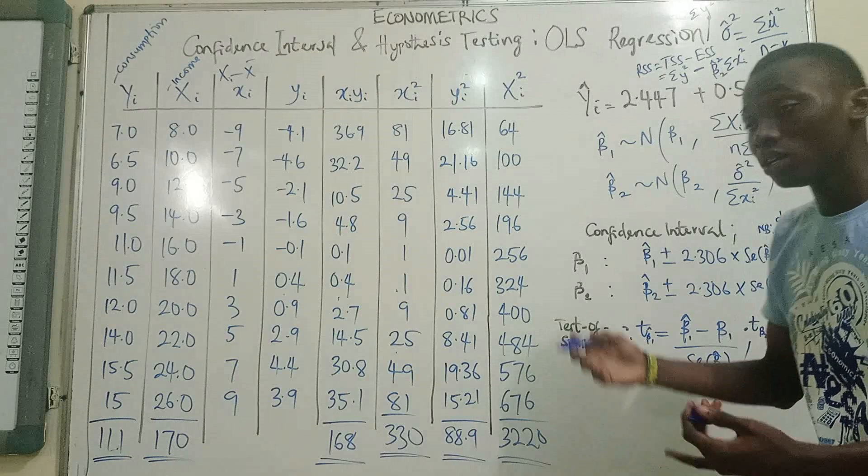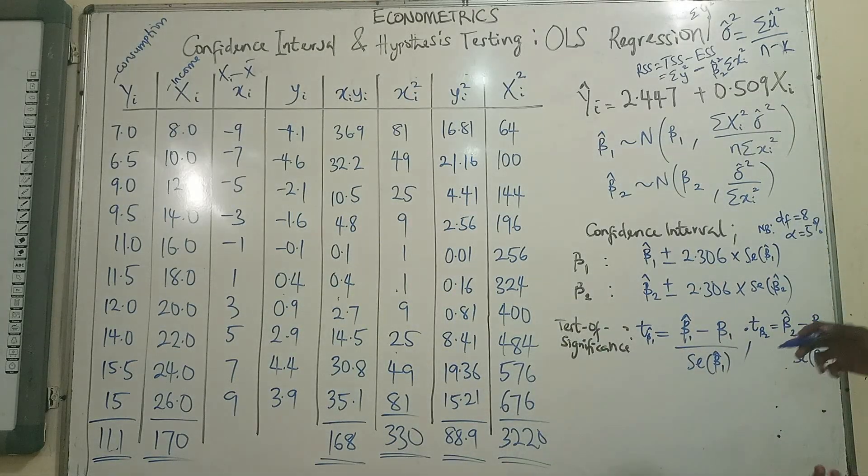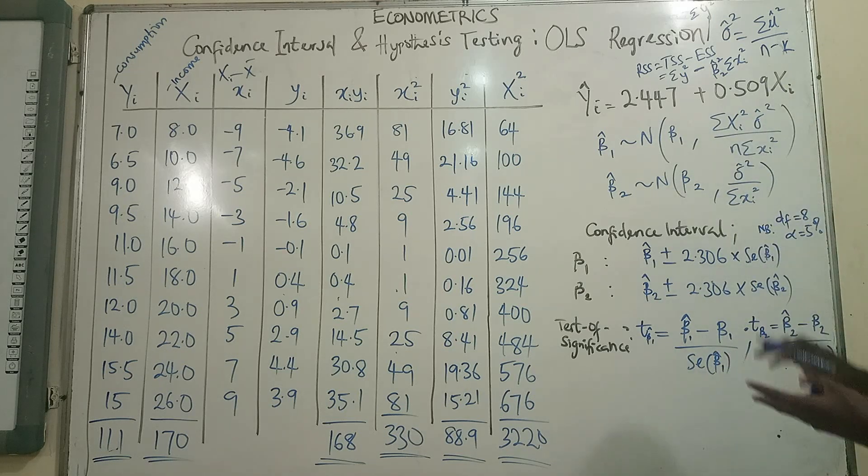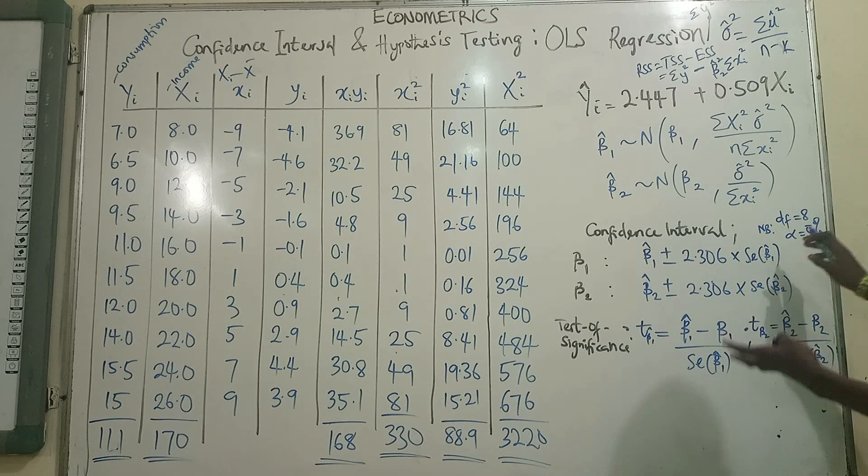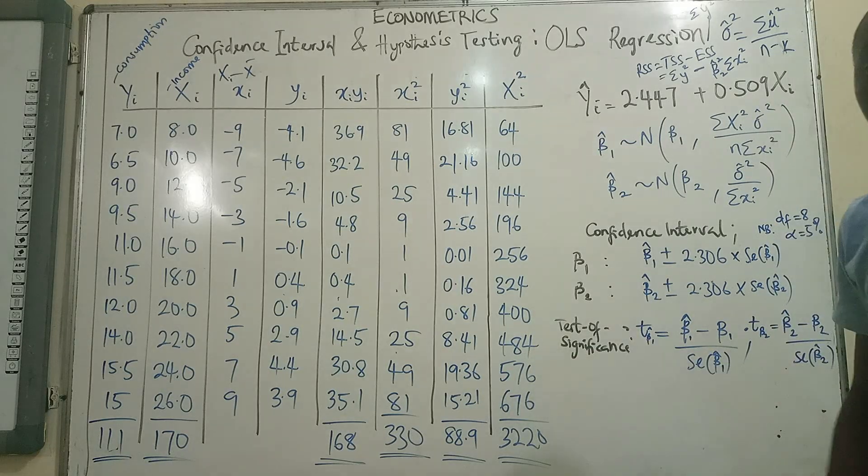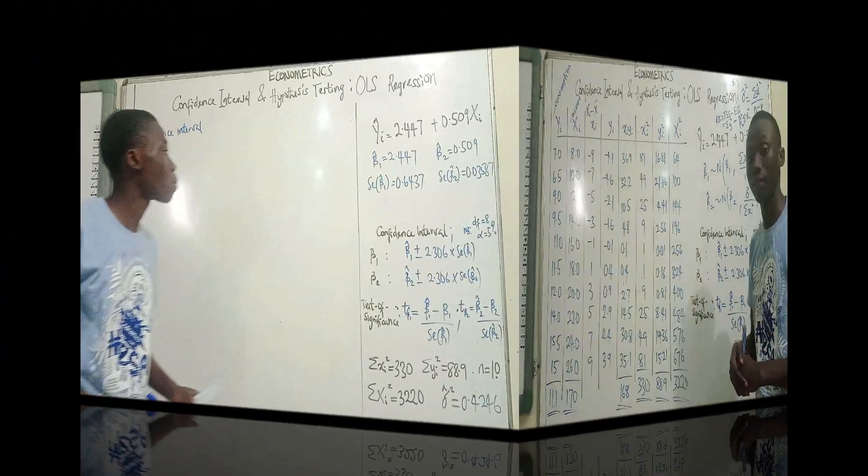Divide by 8 to get our population variance or the variance of the error term. The variance of the error term is also the variance of Y, the dependent variable. And once we have that, we can easily plug it in to get our variance for beta 1 and the standard error. We'll be able to calculate the confidence interval and also run our test to see if the estimates we generated are statistically significant.